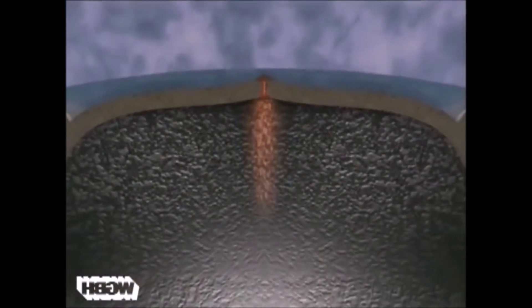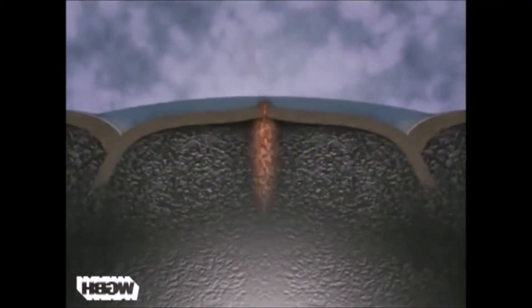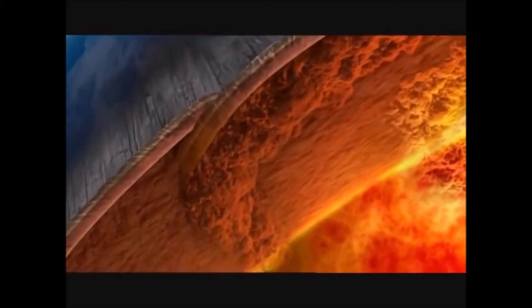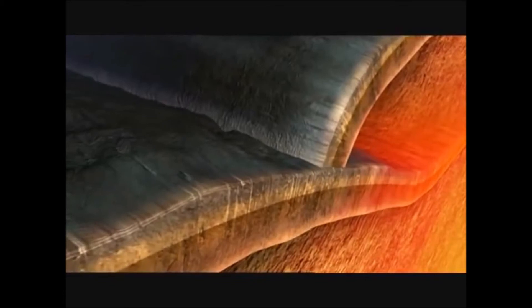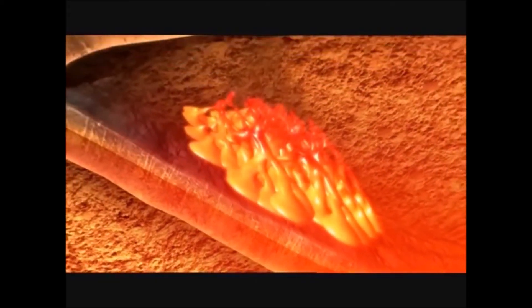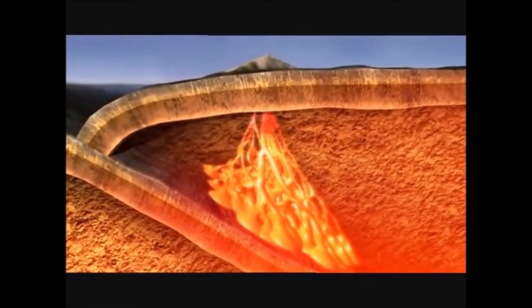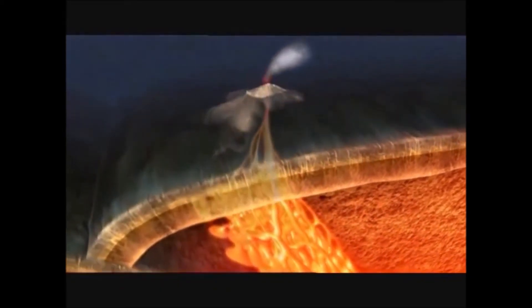New crust is created at spreading ridges, but Earth is not expanding; divergence in one place results in convergence in another. On average, the crust is less dense than the mantle, and oceanic plates are denser than continental plates because they contain a thinner crust. As a result, where oceanic and continental plates collide, the heavier oceanic plate is overridden by the continental plate and descends into the mantle, melting and releasing magma, which erupts at the surface.